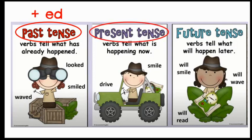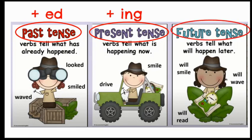Present tense verbs tell about what is happening now, and these verbs usually end with -ing. So we can say he is smiling — -ing makes an -ing sound. We can also say he is driving up the street, which tells us it is happening in the present. Present means now.